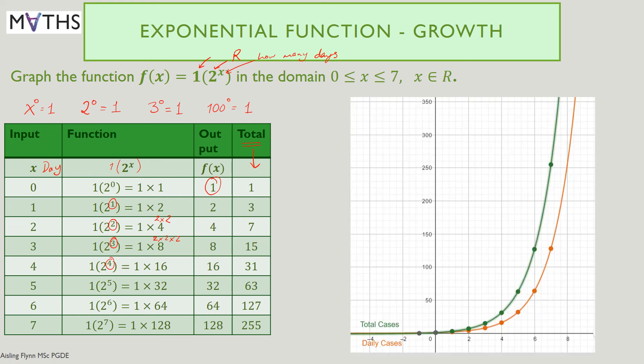Here's a graph of those. On the orange line, we see the exponential function for the daily cases, doubling each day. On the green line, I have the totals, rising rapidly also.